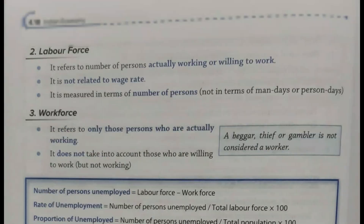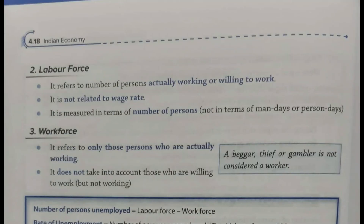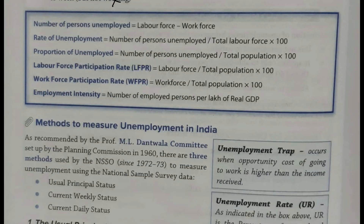Actual number of working persons and willing to work persons labor force mein hote hain, jabki workforce mein kya hota hai — only those persons who are actually working. Willing to work wala angle yahan par nahi hota hai. Toh iske basis par kuch rates nikalein jaate hain.